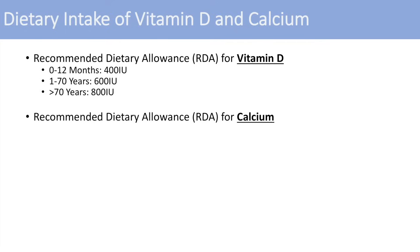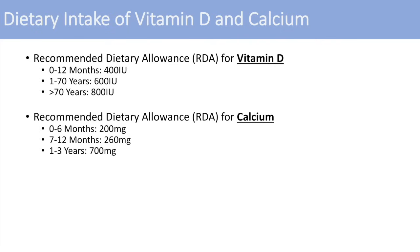The recommended dietary allowance for calcium for infants from 0 to 6 months is 200 milligrams per day; from 7 to 12 months, 260 milligrams per day; from 1 to 3 years, 700 milligrams per day; from 4 to 8 years, 1,000 milligrams per day; and from 9 to 18 years, 1,300 milligrams per day.